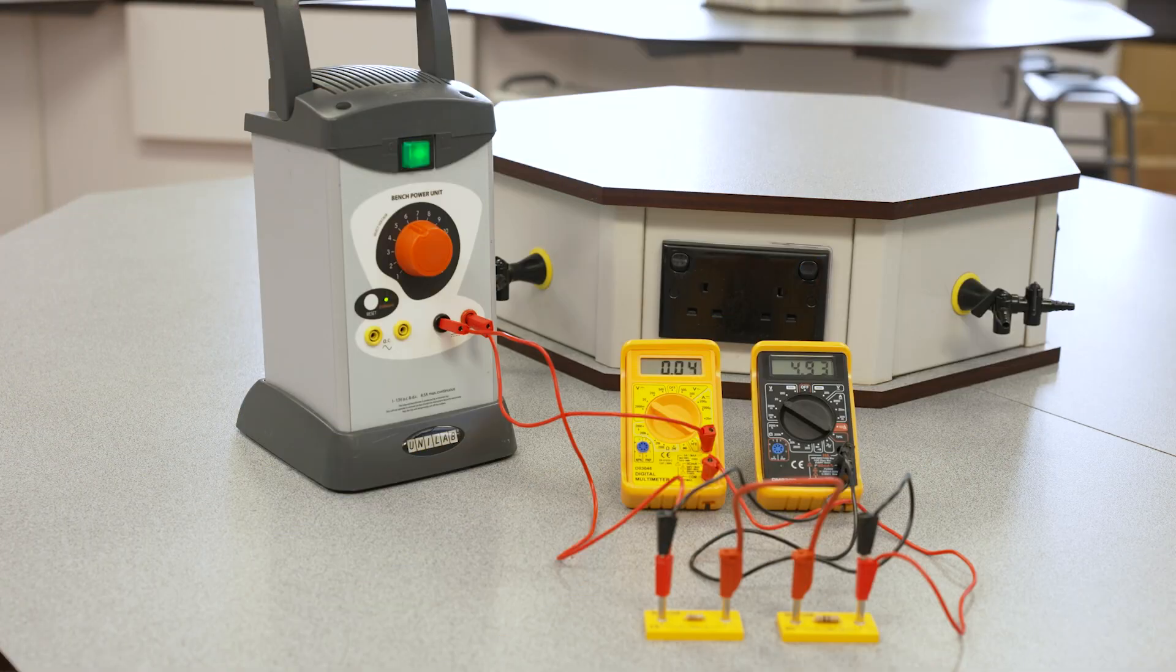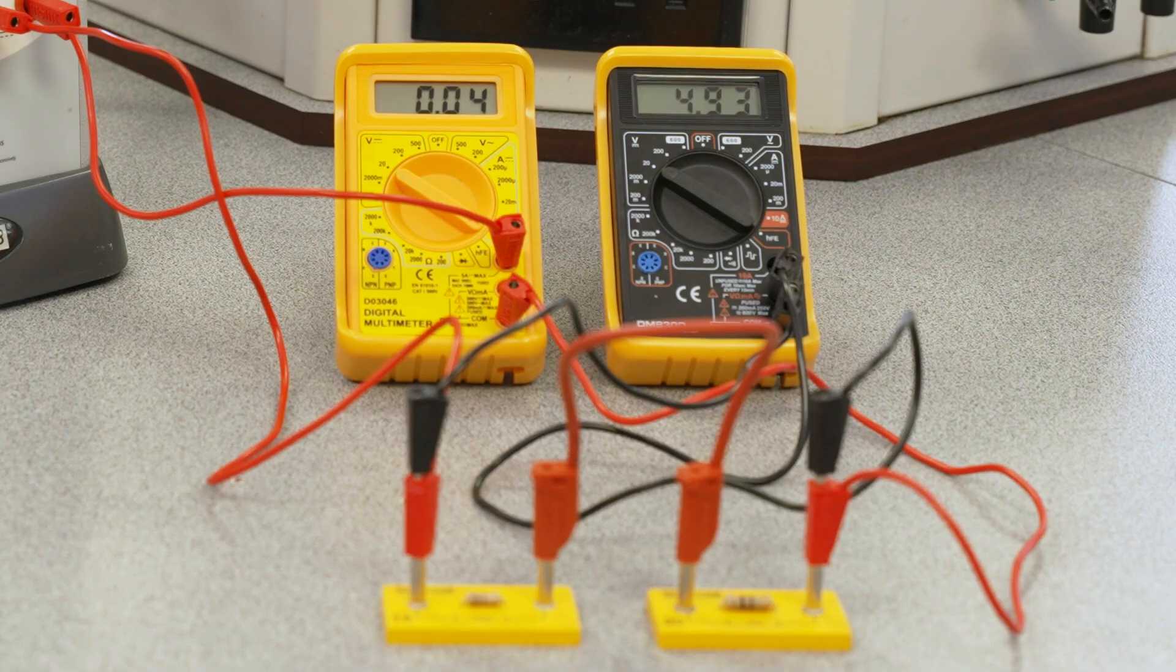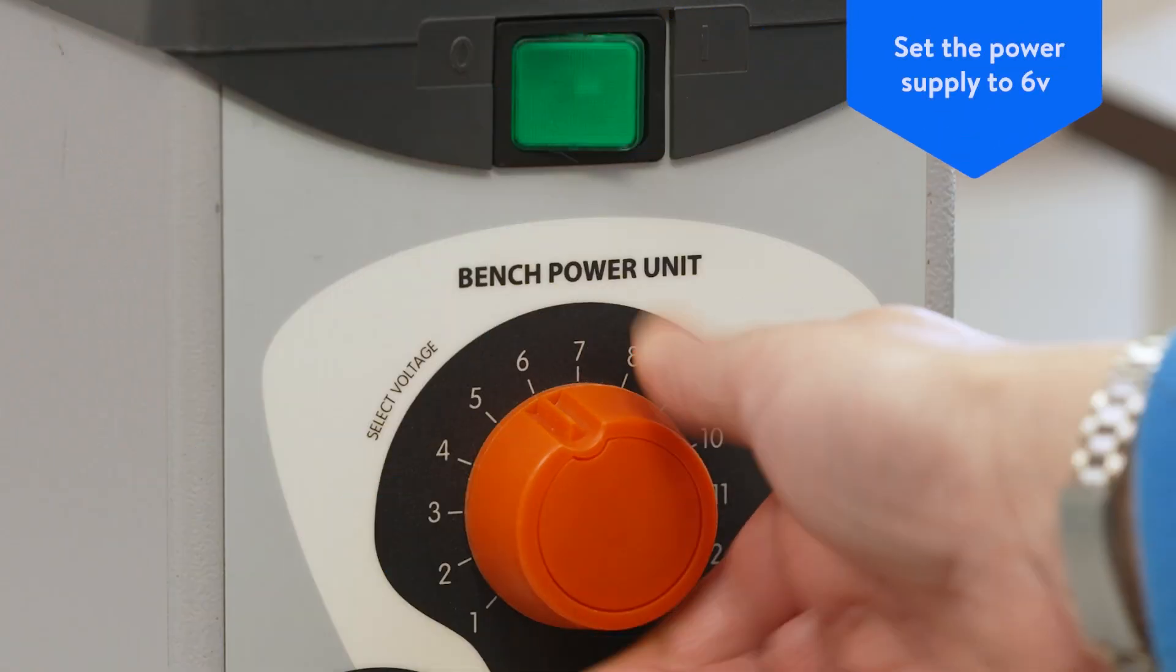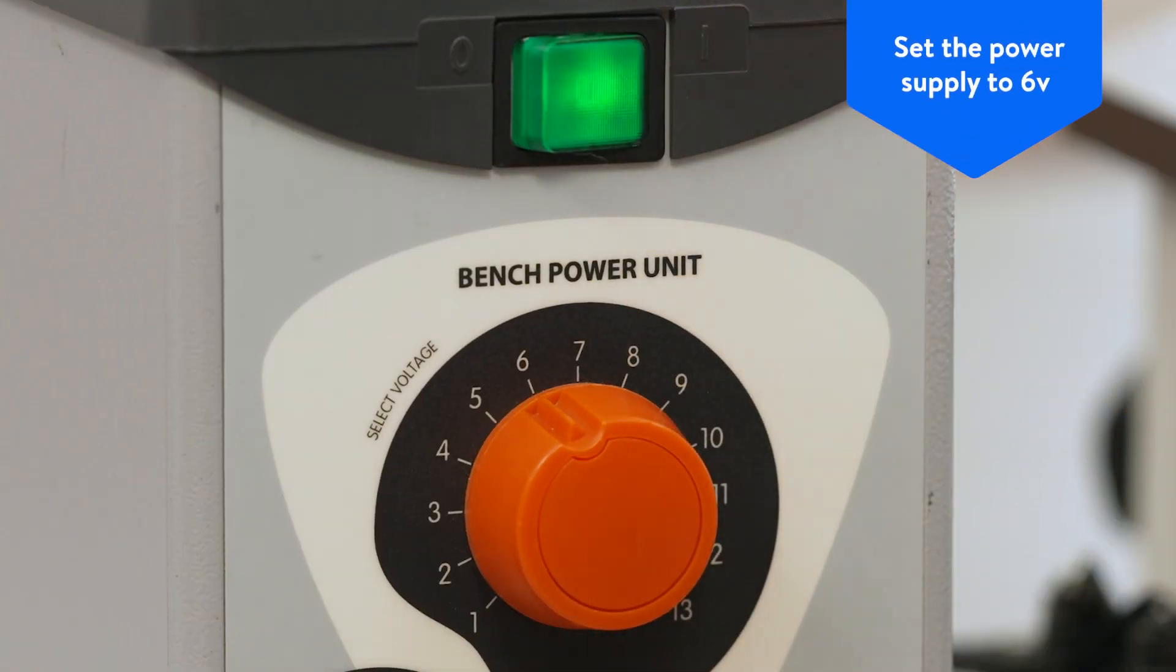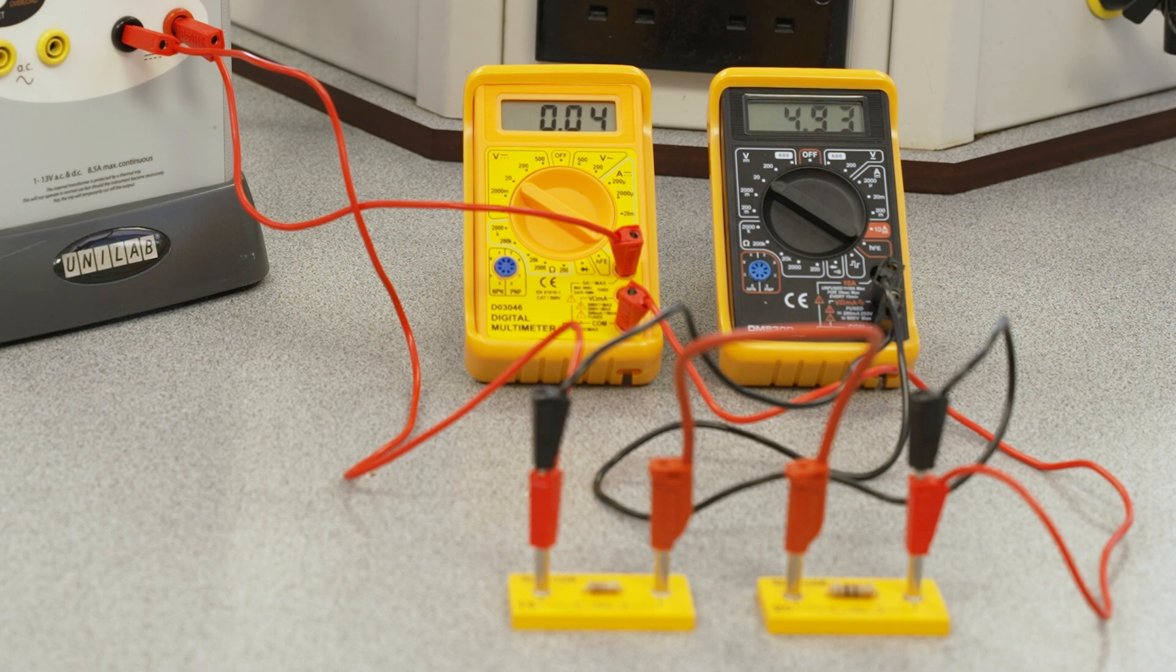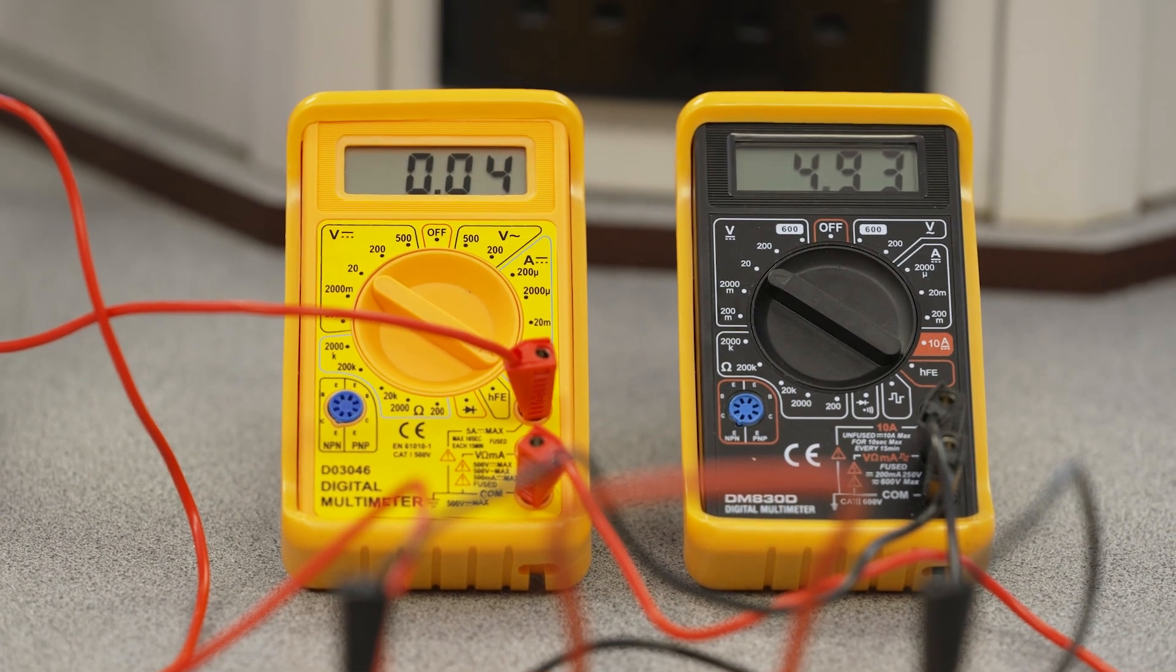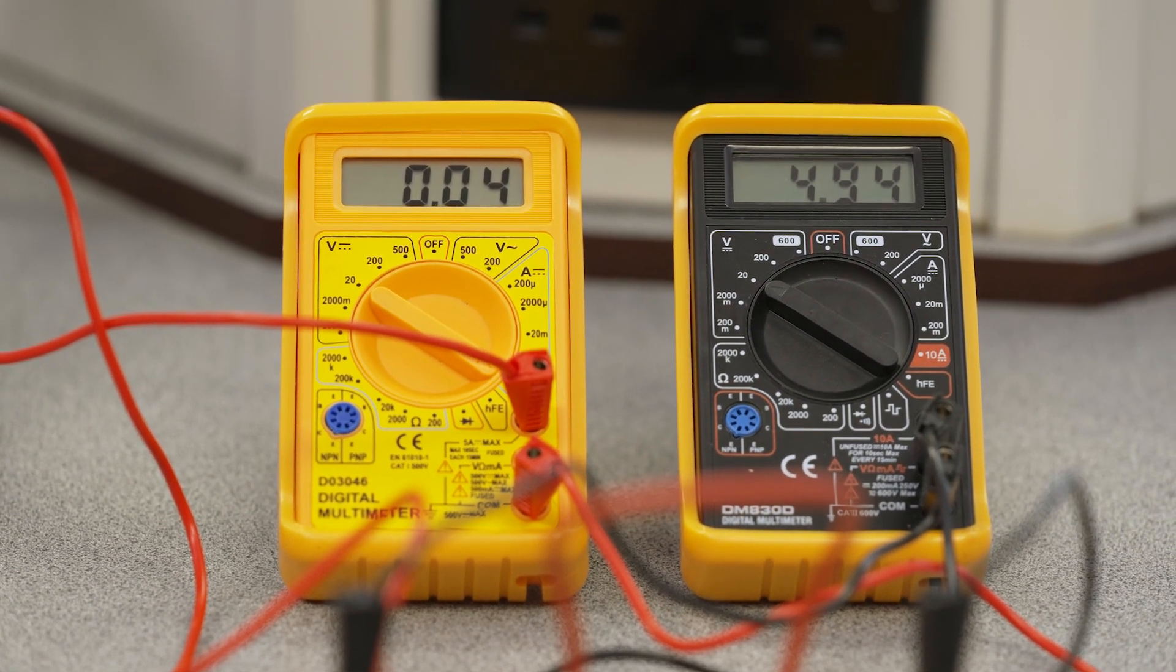Arrange the resistors in series with each other as follows. Make sure the power supply is still set to 6 volts and turn the power supply on. Take notes of the readings on the ammeter and voltmeter. Determine the total resistance of the resistors when they are connected in a series circuit.